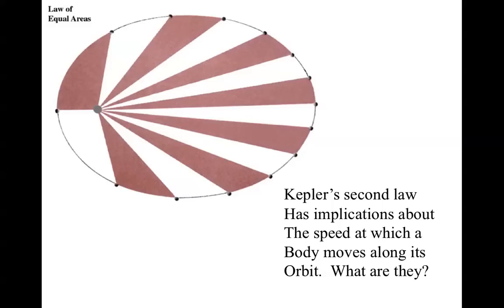For example, if your orbit takes you to a distance of half an AU at its closest and out to 2 AU at its farthest, you'll be moving four times as fast at half an AU as you are at 2 AU.